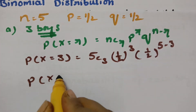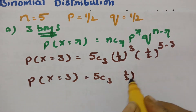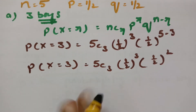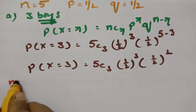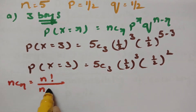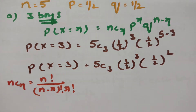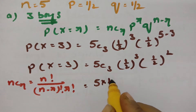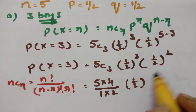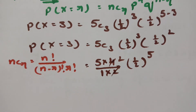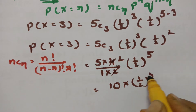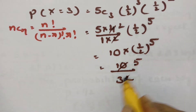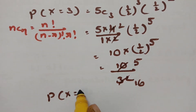P(X=3) = 5C3 × (1/2)^3 × (1/2)^2. NCR equals N! divided by (N−R)! × R!. Since 5−3=2, we use 2 backward and 2 front steps. This gives 10 × (1/2)^5 = 10/32, which cancels to 5/16. Therefore the probability of getting 3 boys among 5 children is 5/16 per family.